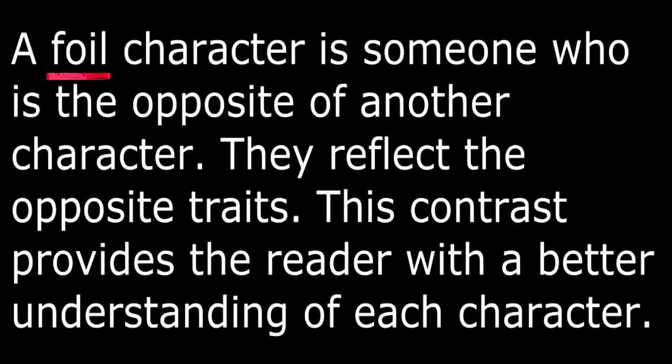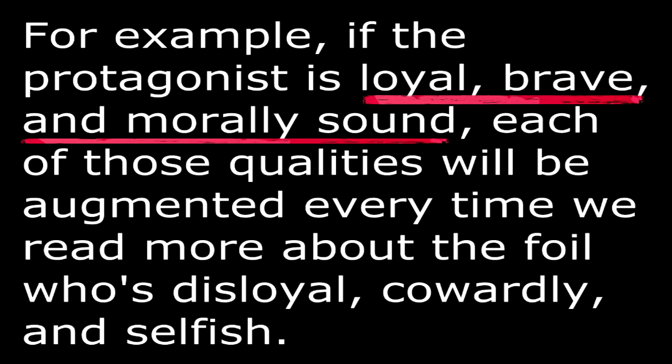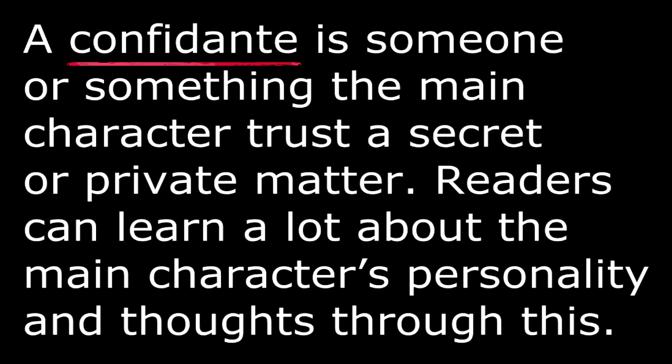A foil character is someone who is the opposite of another character — they reflect the opposite traits. This contrast provides the reader with a better understanding of each character. For example, if the protagonist is loyal, brave, and morally sound, each of those qualities will be augmented every time we read more about the foil who is disloyal, cowardly, and selfish. A confidant is someone or something the main character trusts with a secret or private matter; readers can learn a lot from the main character's personality and thoughts through this.